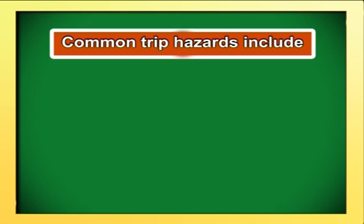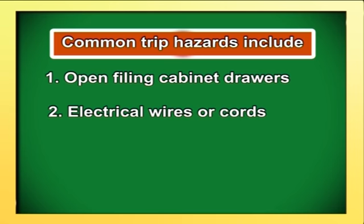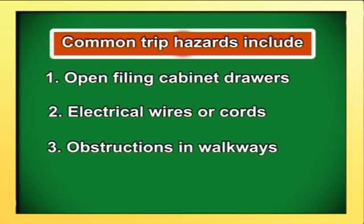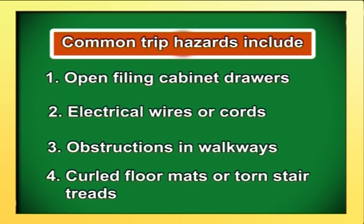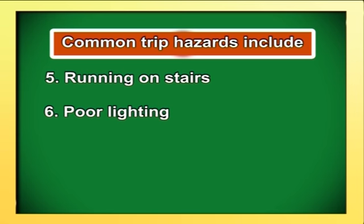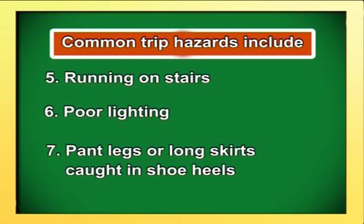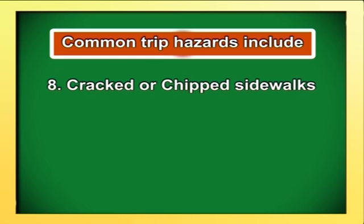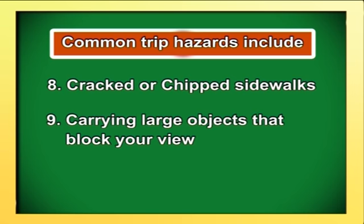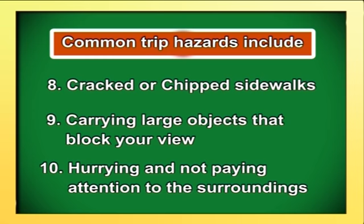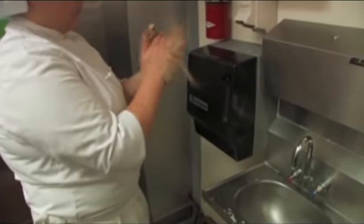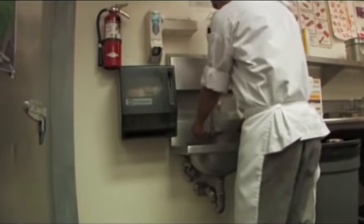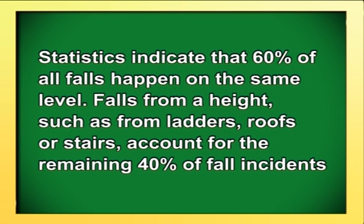Common trip hazards include open filing cabinet drawers, electrical wires or cords, obstructions in walkways, curled floor mats or torn stair treads, running on stairs, poor lighting, pant legs or long skirts caught in shoe heels, cracked or chipped sidewalks, carrying large objects that block your view, and hurrying without paying attention to surroundings. Falls usually happen when your body movements shift your body too far away from your center of balance. Any slip or trip can end up in a fall. Statistics indicate that 60% of all falls happen on the same level, while falls from a height such as ladders, roofs or stairs account for the remaining 40%.